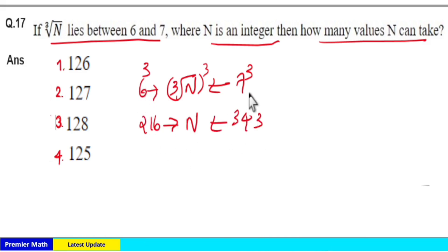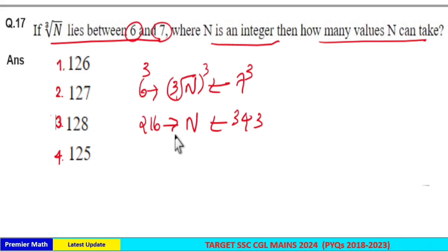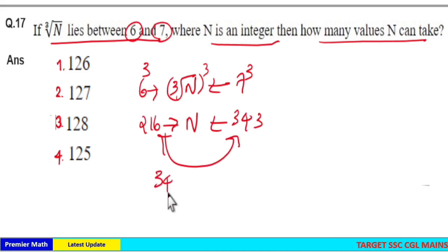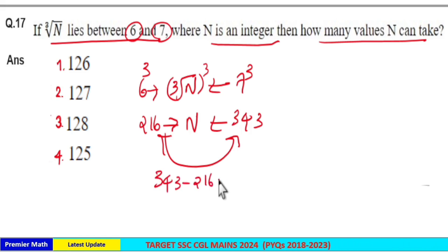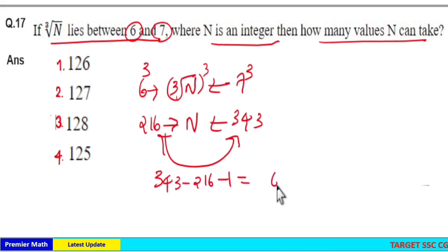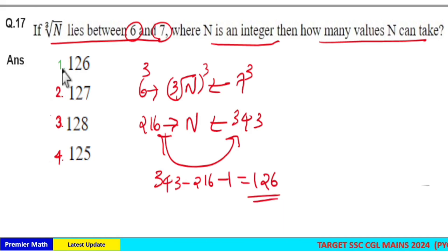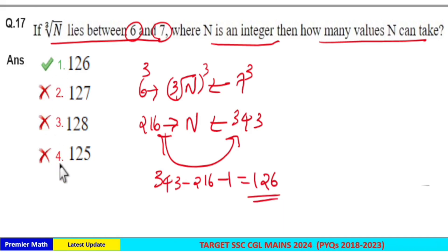To count the number of integer terms strictly between 343 and 216, we use 343 minus 216 minus 1, which equals 127 minus 1, giving us 126 terms. So option 1 is the answer: 126 values.